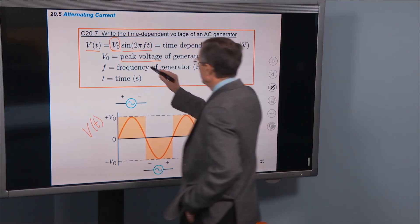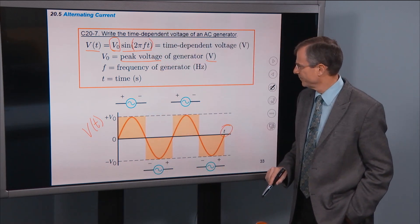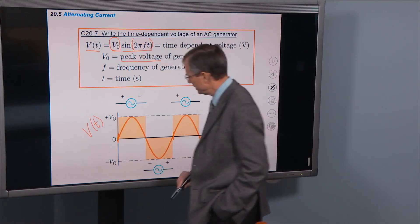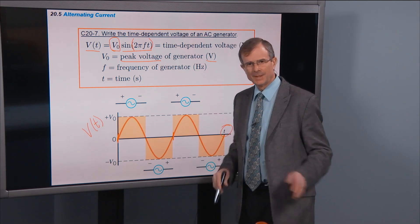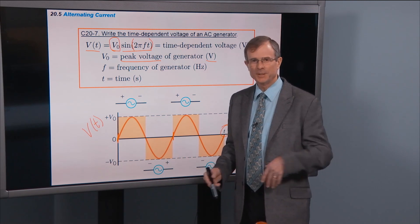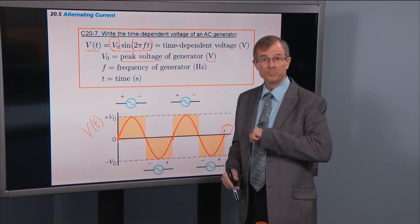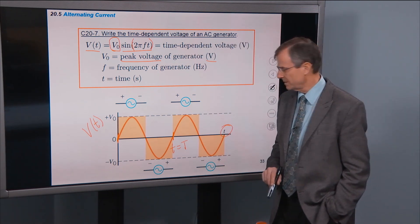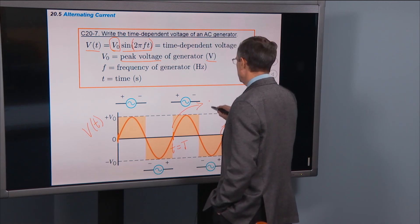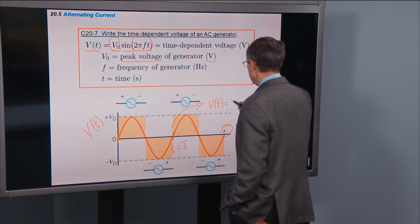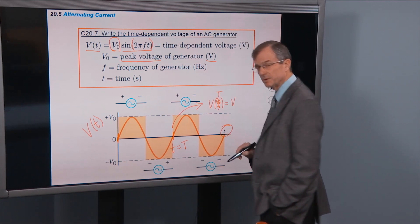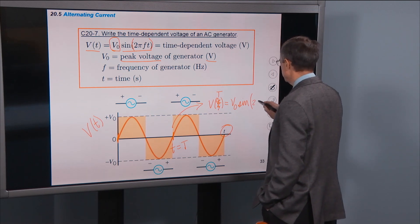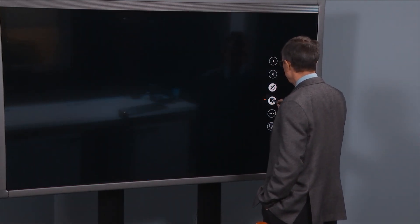Let's double check to make sure the argument of the sine is correct. If we look at the time required to complete one cycle — the period T — at that point the voltage is V-naught sine of 2πf times capital T for the period.